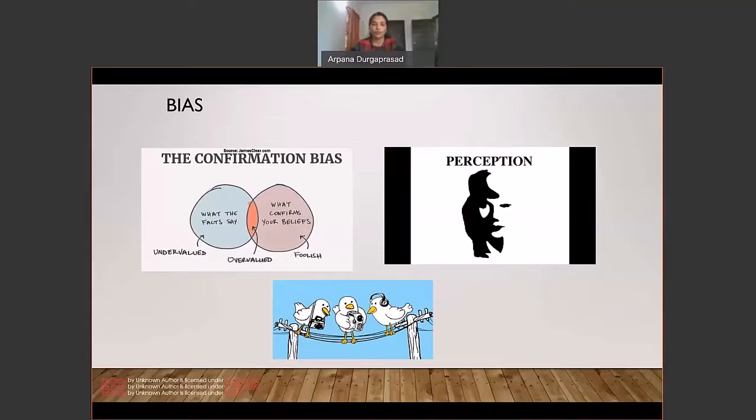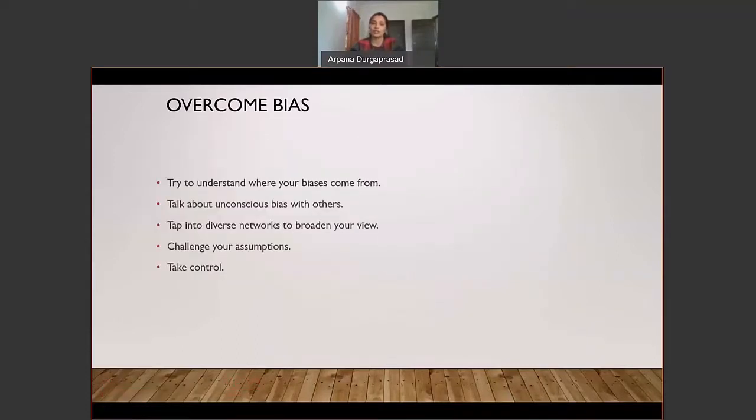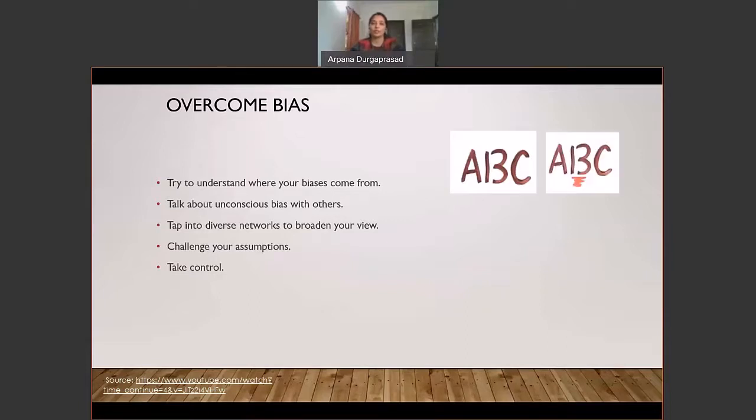What else can you do on overcoming bias? Try to understand where the bias comes from. If you know about it, you will try to avoid it. And talk about unconscious bias with others. Tap into diverse networks. Have different kind of people in your friend circle, in your colleague circle, just to know their ideas. That really helps to overcome bias. And of course, challenge your assumptions with facts and take control over your biases. Be aware. Say, for example, if you see this, you would call it ABC, but it could very well be A13C. This is one simple example and that's nothing but the brain doing its unconscious bias again.